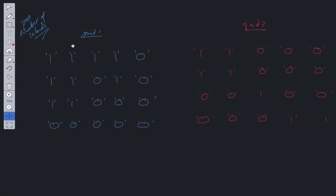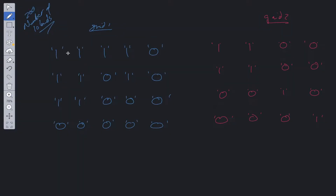Let's jump into the explanation starting with grid 1. We want to return a count, so we initialize a count variable to 0. We loop through the grid to find positions equal to the string '1'. Say we start at the first position — we have a 1, so we have land, but we need to check adjacent values to see if it connects to other land to form a larger island.